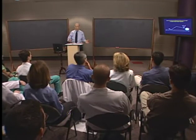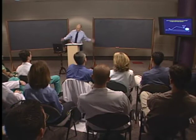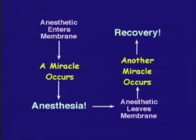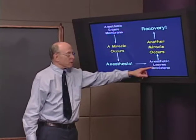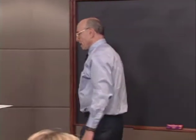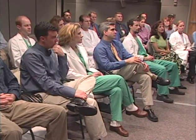Is there a simple explanation for all of inhaled anesthesia? Neil Harrison provided this complete explanation: it involves a membrane, a miracle, and then anesthesia. The bigger miracle is when the anesthetic leaves the membrane and recovery occurs. Regarding immobility, we've learned that anesthetics act on the spinal cord. To study this, we must study effects of inhaled anesthetics on the spinal cord.